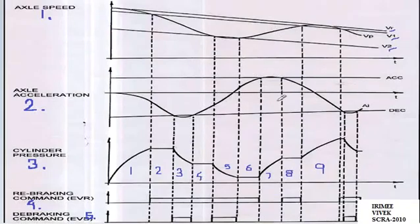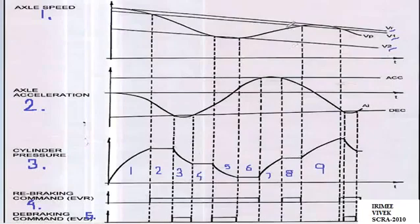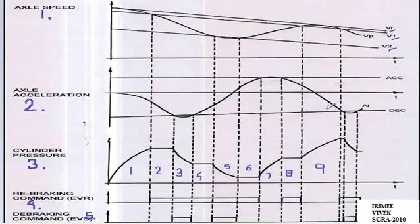In this case, the axle speed is within the safe working range. Region 8 of Graph 3: Brake cylinder pressure is constant, since axle speed and axle acceleration both are within the desired and safe working range. Region 9 of Graph 3: Brake cylinder pressure is increased — the brakes are applied — because axle speed has exceeded the upper threshold speed, resultant to which the axle decelerates as shown in Graph 2.